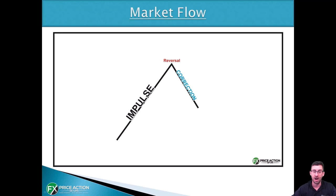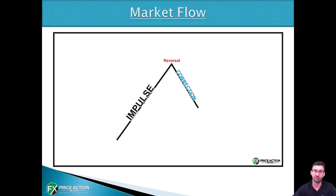The impulse move is the main move of the market — the direction that the market wants to go in. People often refer to this as a trending market, where moves are quite fast and you can clearly see the market going in a certain direction. Then you have the correction, sometimes known as consolidation, where the market builds up its orders and refuels for the next move. We'll also look at reversals — key points where the market turns around and goes to the other side.